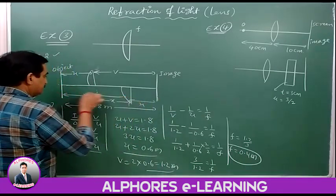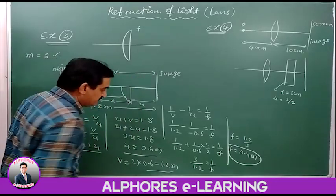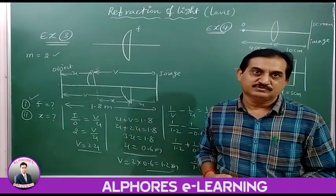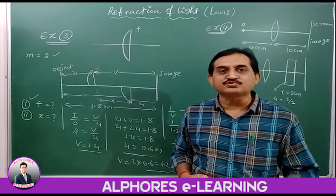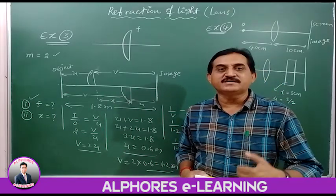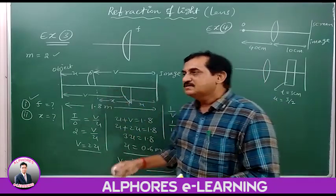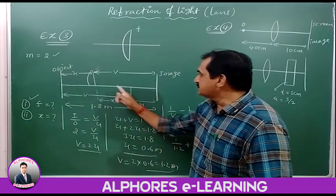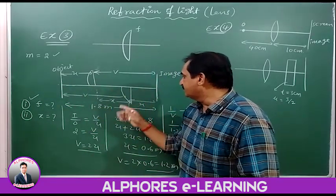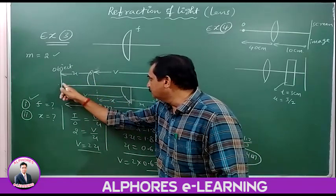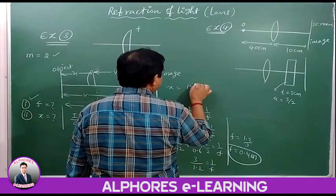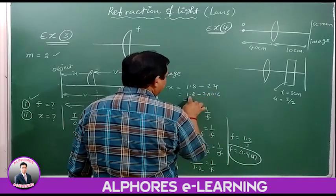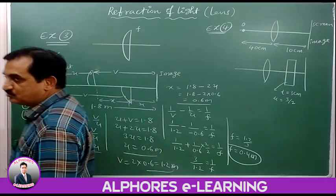Since magnification given by any one of the parts is 2, for each part the object distance is U = 0.6 m and image distance is V = 1.2 m. The total span from object to image for one part is 1.8 m. The separation X between the two lens parts equals 1.8 minus 2U, which is 1.8 − 2 × 0.6 = 0.6 meters.